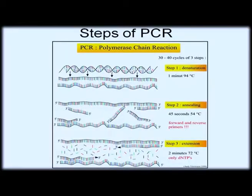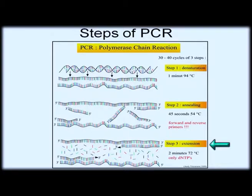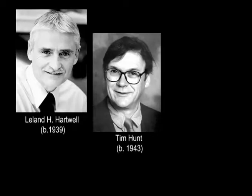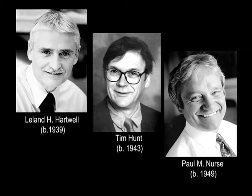PCR involves three steps: denaturation at 94 degrees centigrade, followed by annealing with the RNA primer at 52 to 54 degrees centigrade, and finally DNA polymerization where the enzyme is active at 72 to 74 degrees centigrade. Thereby a small fragment of DNA can be amplified into a huge quantity, and it is involved in the technique of DNA fingerprinting.